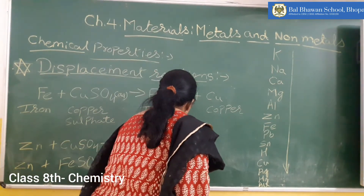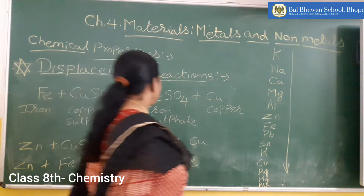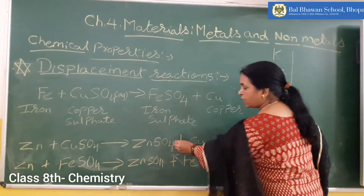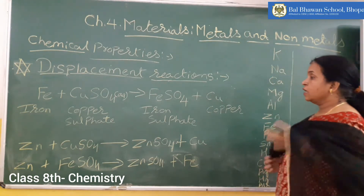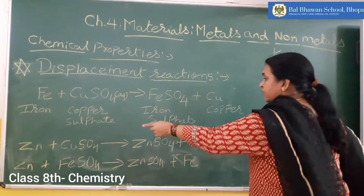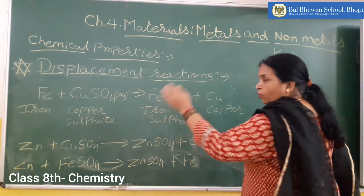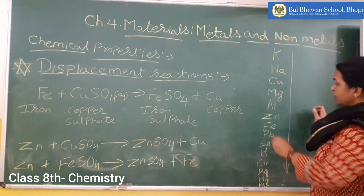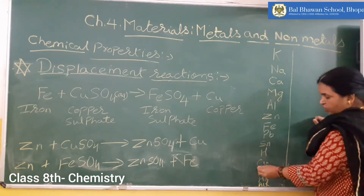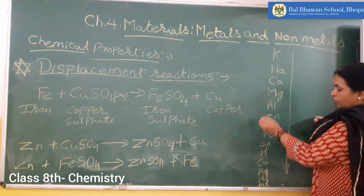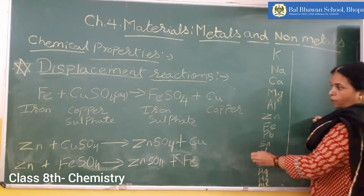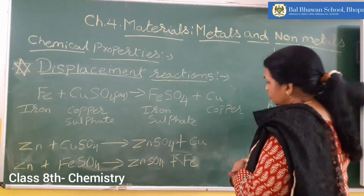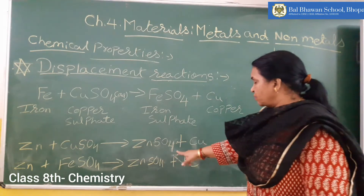What is produced? ZnSO₄ plus copper. Here zinc has displaced copper from copper sulfate solution. Why has zinc displaced copper? The reason is the same: zinc is more reactive than copper. So zinc has displaced copper from copper sulfate solution and produced a new product — zinc sulfate and free copper.